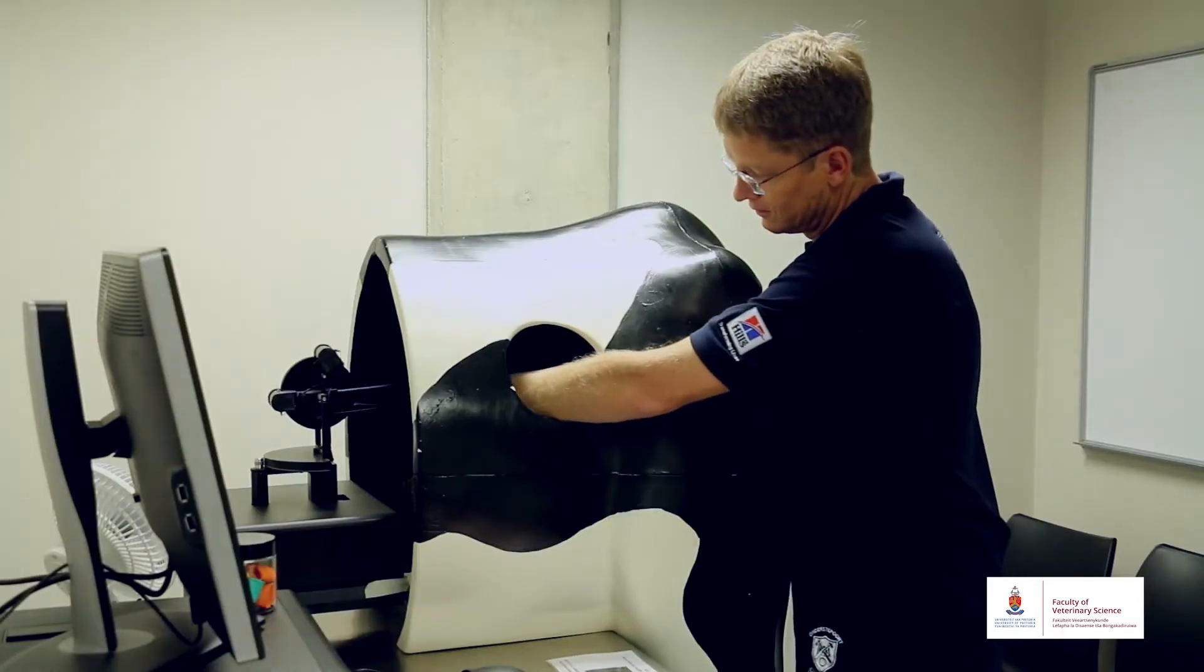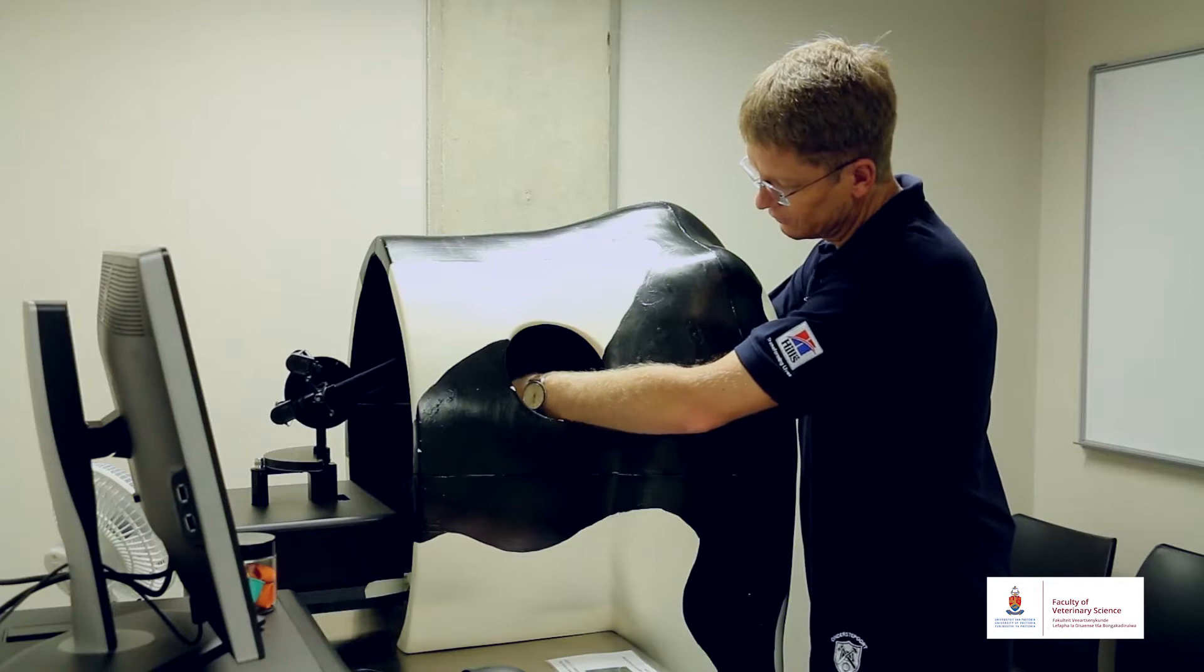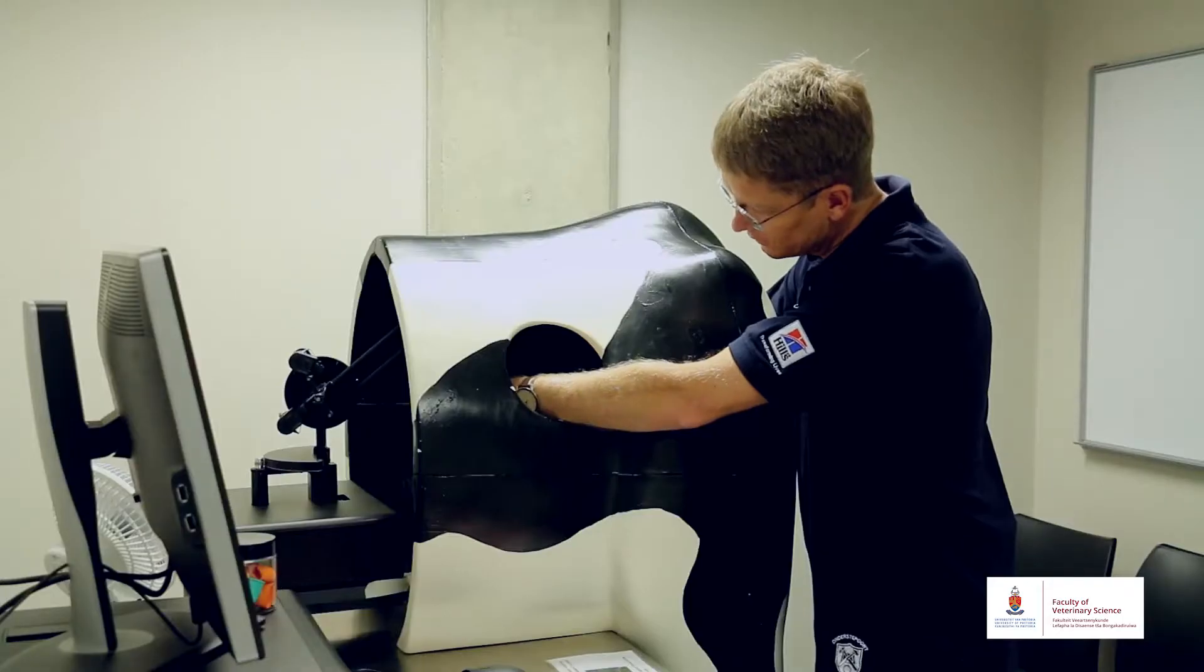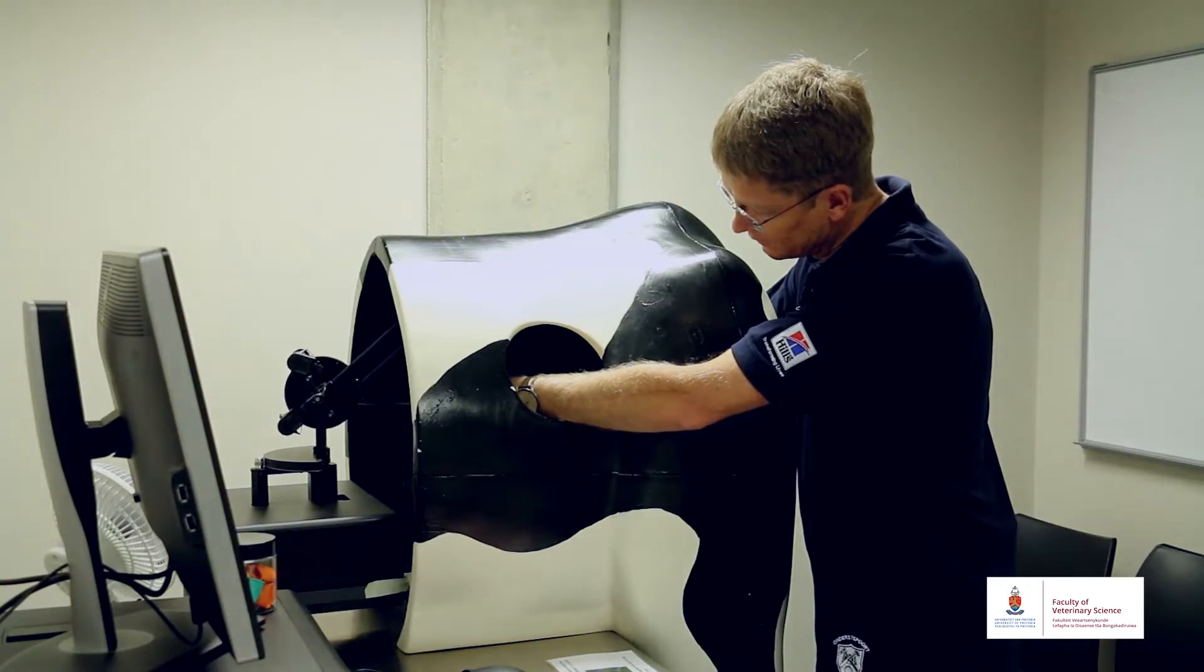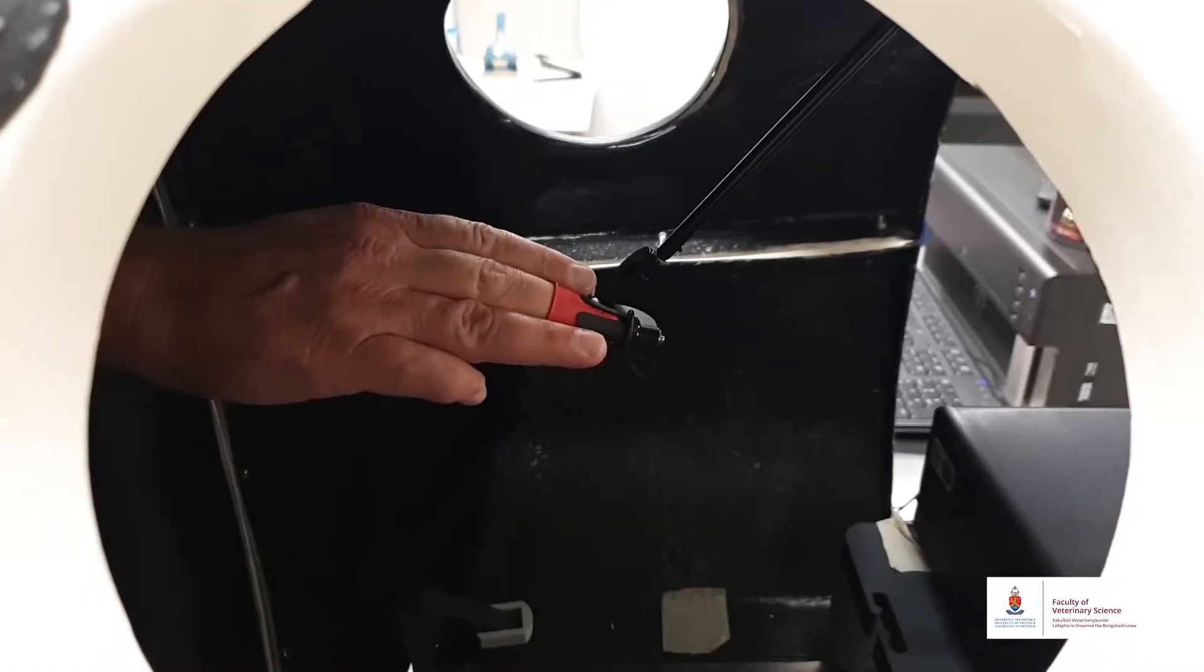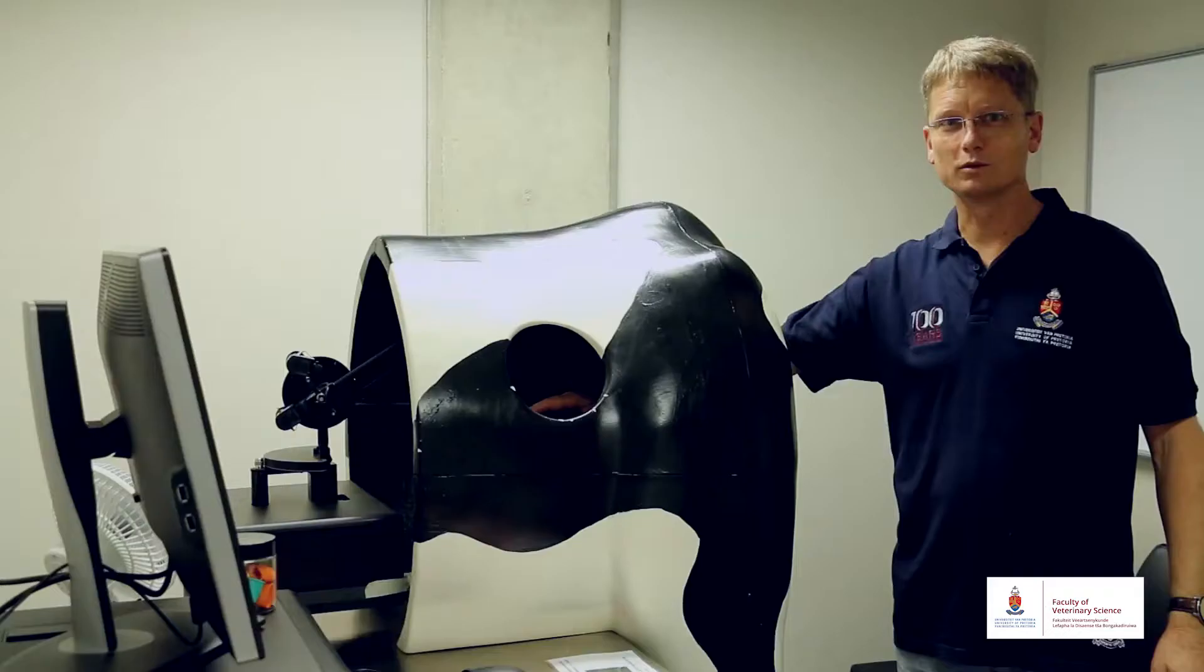On the inside there is a device that I have to connect my finger to that will control the movement of my hand so that it will train me how to palpate, how to do a rectal palpation on a horse or on a cow.